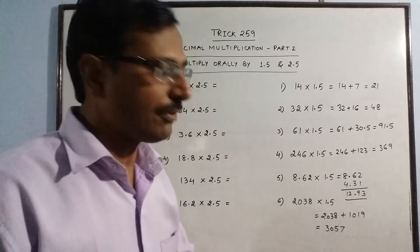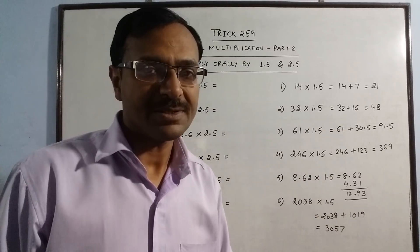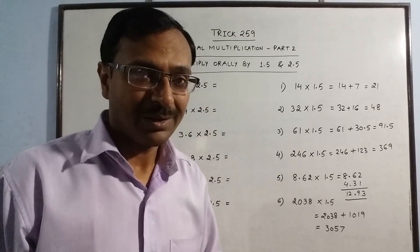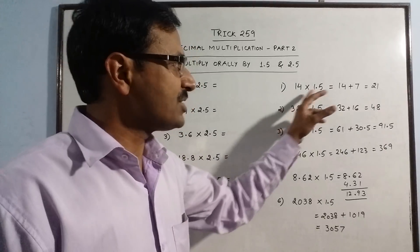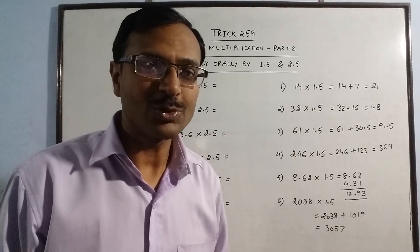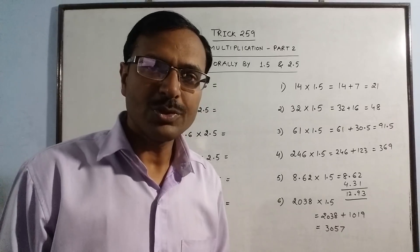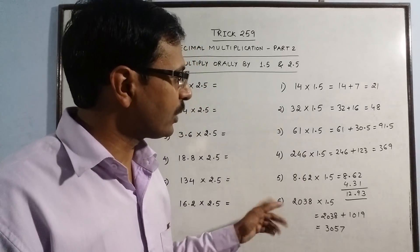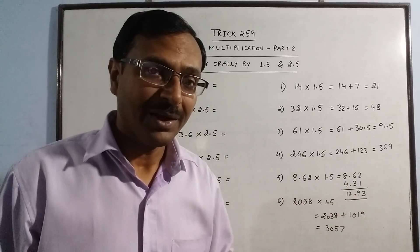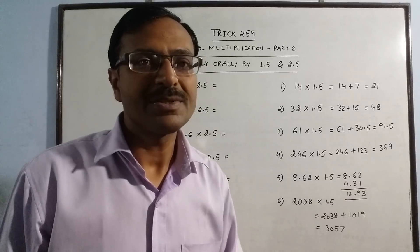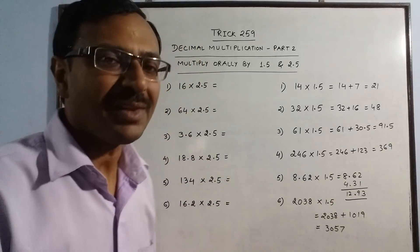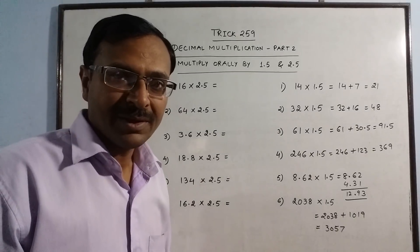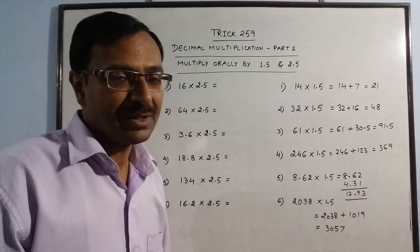Just observe that I have not done any rough work in multiplying these things. I know many of you will tell me that these things can be done by traditional multiplication also. Yes, it suits you more, but in competitive examinations if you do traditional multiplication of 8.62 and 1.5, it will consume four times the time taken by this method. Mental mathematics rules are awesome. They are amazing if you have mastery over these concepts.